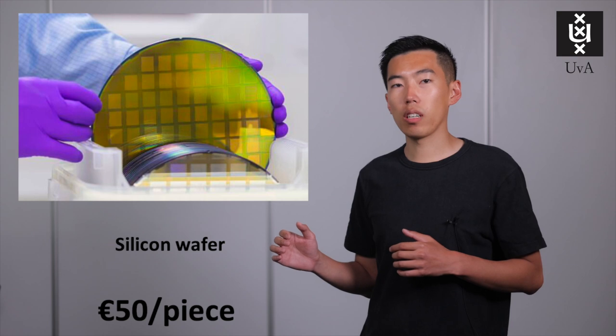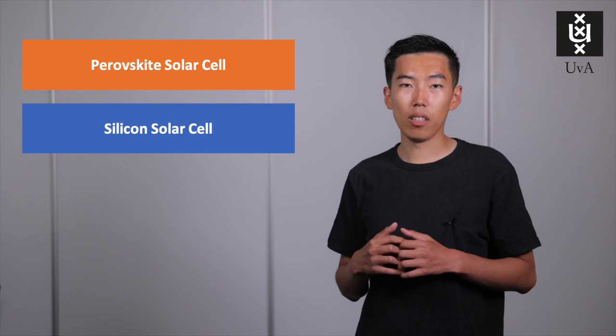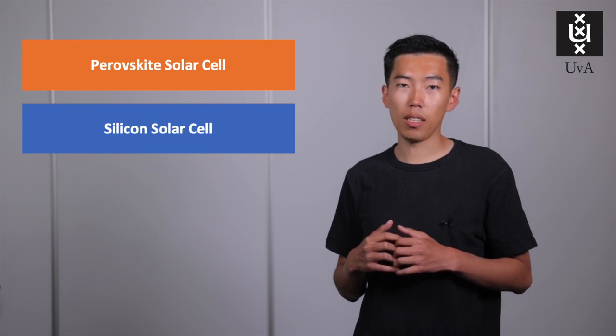We can make solar cells with perovskite. The cool thing is that perovskite and silicon can absorb different color from sunlight. So, when we put perovskite solar cells together with silicon solar cell, we can use sunlight much more efficient than before. The total efficiency can be doubled to 36%.